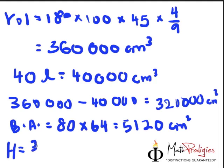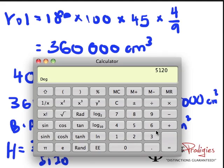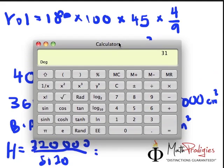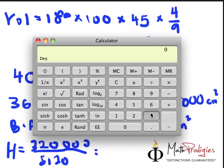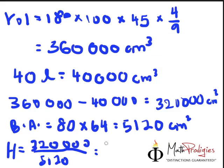And so how do I find my height? Volume divided by my base area. So very simple: 320,000 divided by 5,120. Sorry about this, my computer is lagging for some weird reason. 320,000 divided by 5,120. There you have it - 62.5 cm. Phew! We are done. That's it.